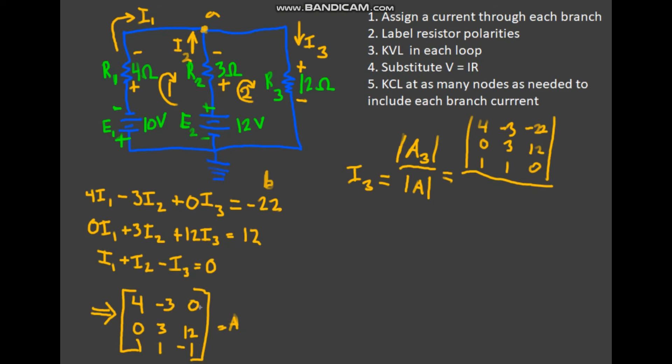So when you plug it in your calculator, you need to plug it in however you take the determinant of a matrix. So we're taking the determinant of A with column three replaced with these numbers. We're taking that over the determinant of the whole thing, so 4, -4, -3, 0, 0, 0, 3, 12, 1, 1, -1. And when you take the determinant of A₃ over A, you'll get that I₃ is equal to 316A.